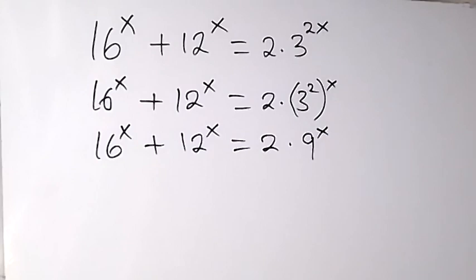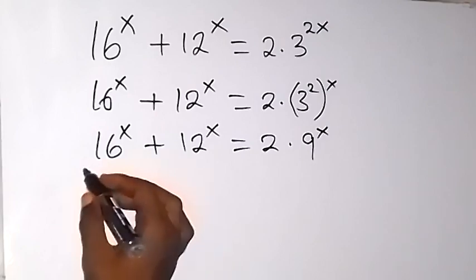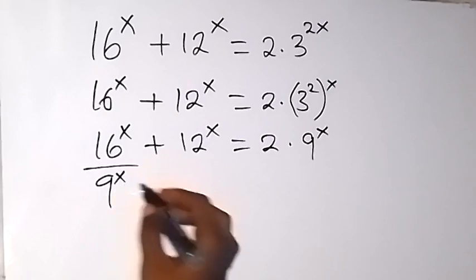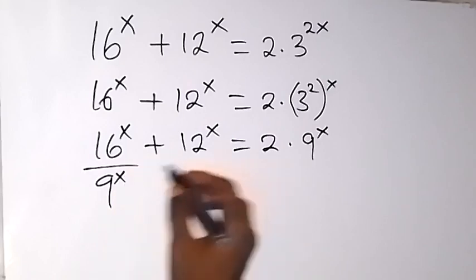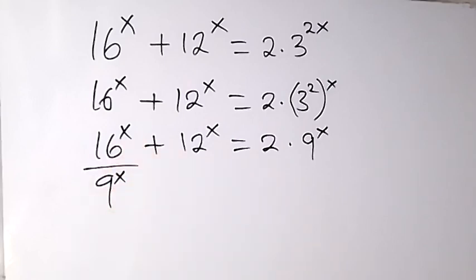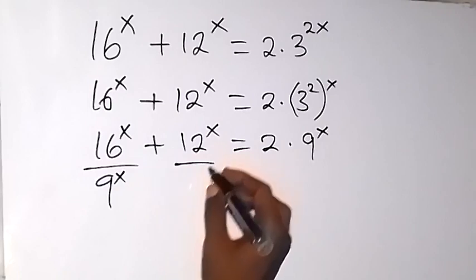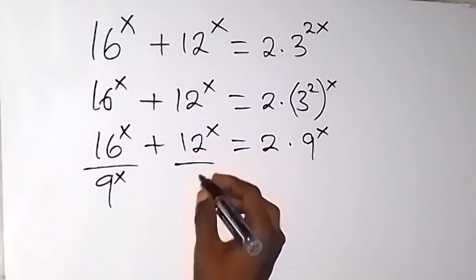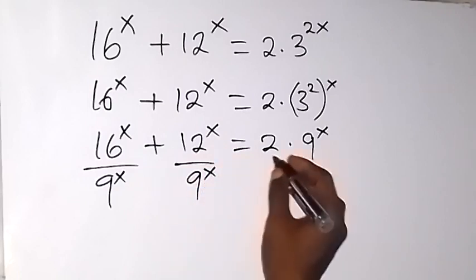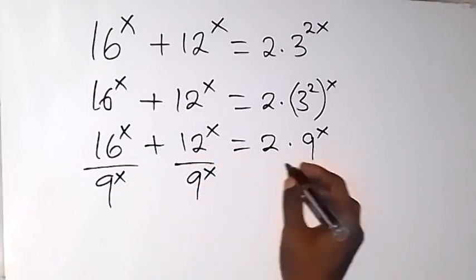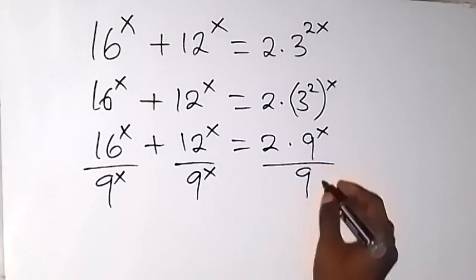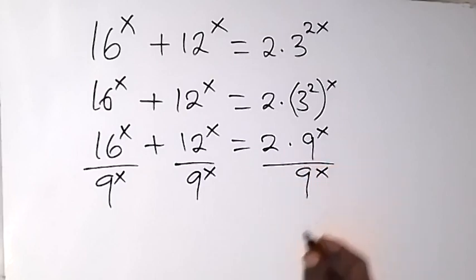From here, let's divide through by 9 raised to power x. When we divide through by 9 raised to power x, we have 16 raised to power x over 9 raised to power x, plus 12 raised to power x over 9 raised to power x, and this side as well over 9 raised to power x.